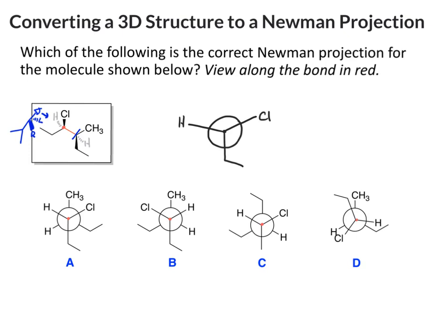Next, if we do the same thing at the back carbon, pointing straight up in the plane is the methyl group. So that's going up toward my head.